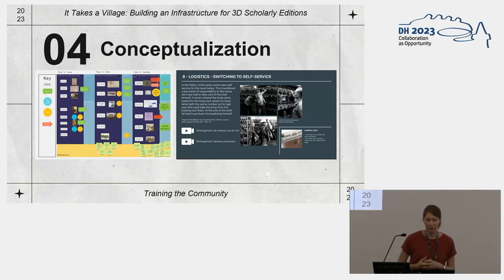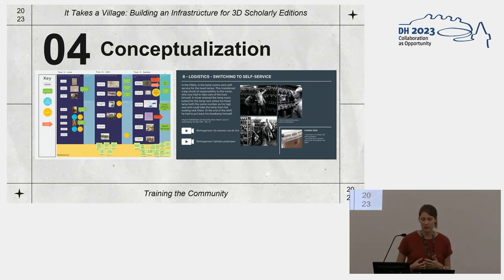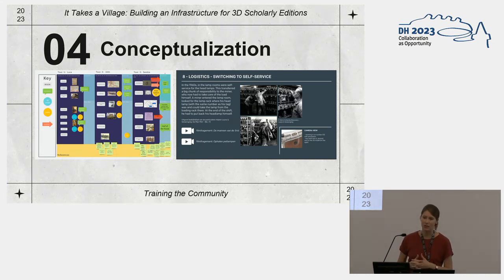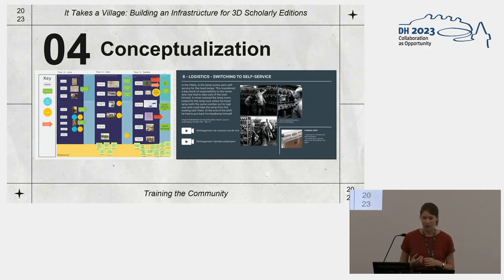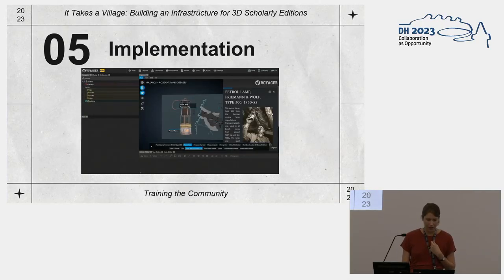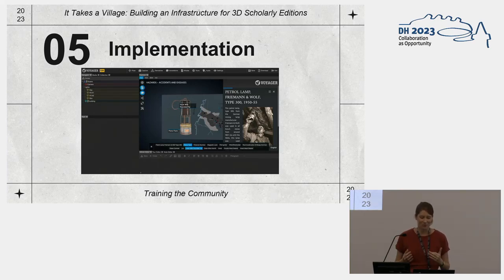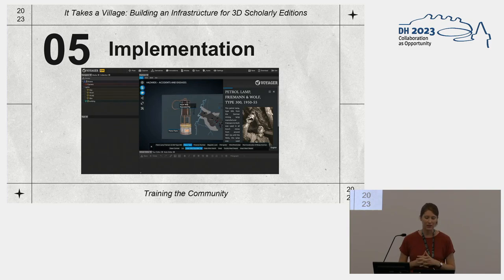Each time we conduct training, we ask participants to point out mistakes or confusing syntax in the instructions, which has been useful for improving the tutorial's understandability. We also update the tutorial as the software is updated — the Voyager team does updates every month, sometimes with major changes. Once participants have completed most of the basic tutorial, we have them start thinking of their own 3D edition, using online brainstorming tools like Google Jamboard or Mirrorboard, or analog pen and paper with sticky notes.